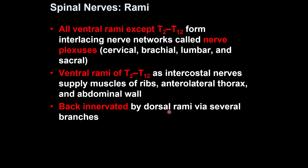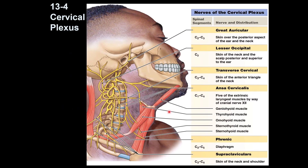I recommend you study each plexus separately, not all together, because it will be difficult to remember everything. The cervical plexus is formed by nerves between C2 and C5 — a small branch of C1 is also involved, but mostly it is C2 to C4, with C5 slightly involved. The cervical plexus is divided into sensory and motor branches.